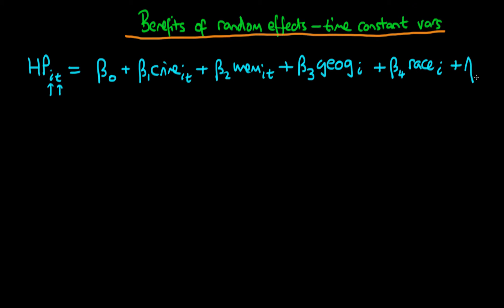And then finally we just have left over our composite error eta_it, where we just remember that eta_it is equal to alpha_i. So alpha_i here is the remaining factors other than geography and race which are specific to each particular city, and then we have our idiosyncratic error u_it.